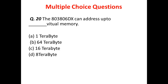Question 9: The 80386 DX can address up to how much virtual memory? Option A is 1 terabyte, Option B is 64 terabytes, Option C is 16 terabytes, and Option D is 8 terabytes. The answer is B — 64 terabytes.